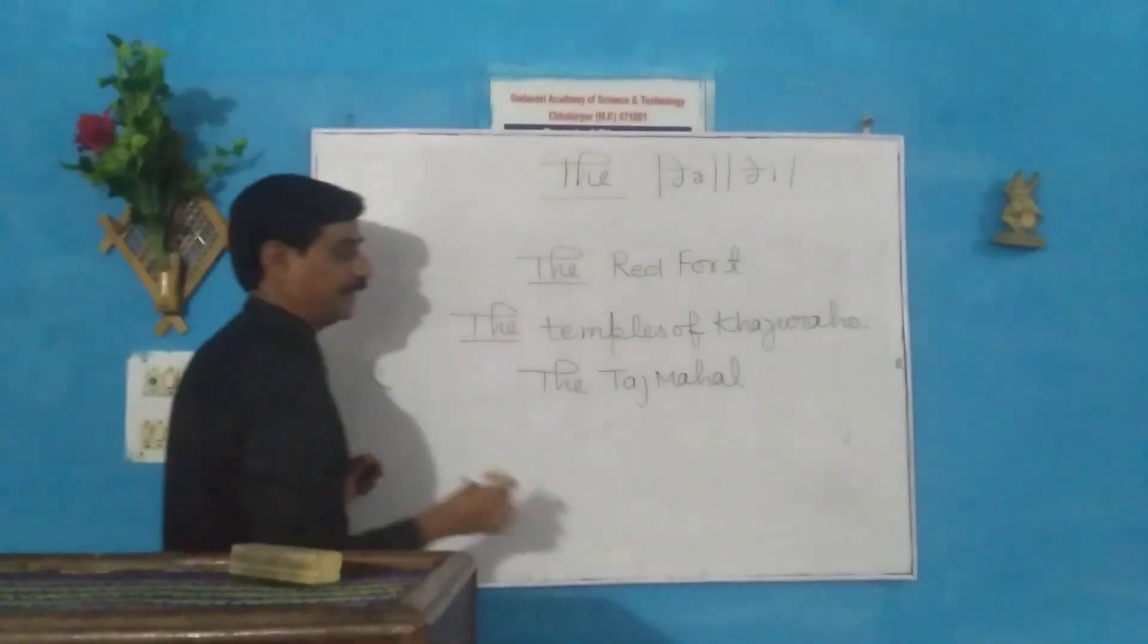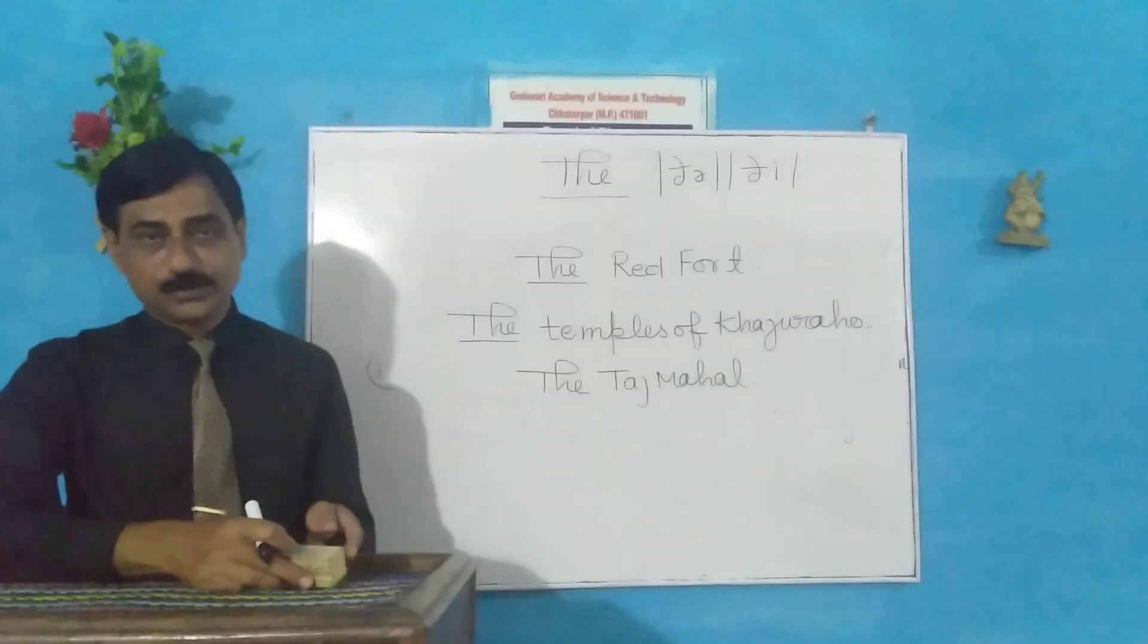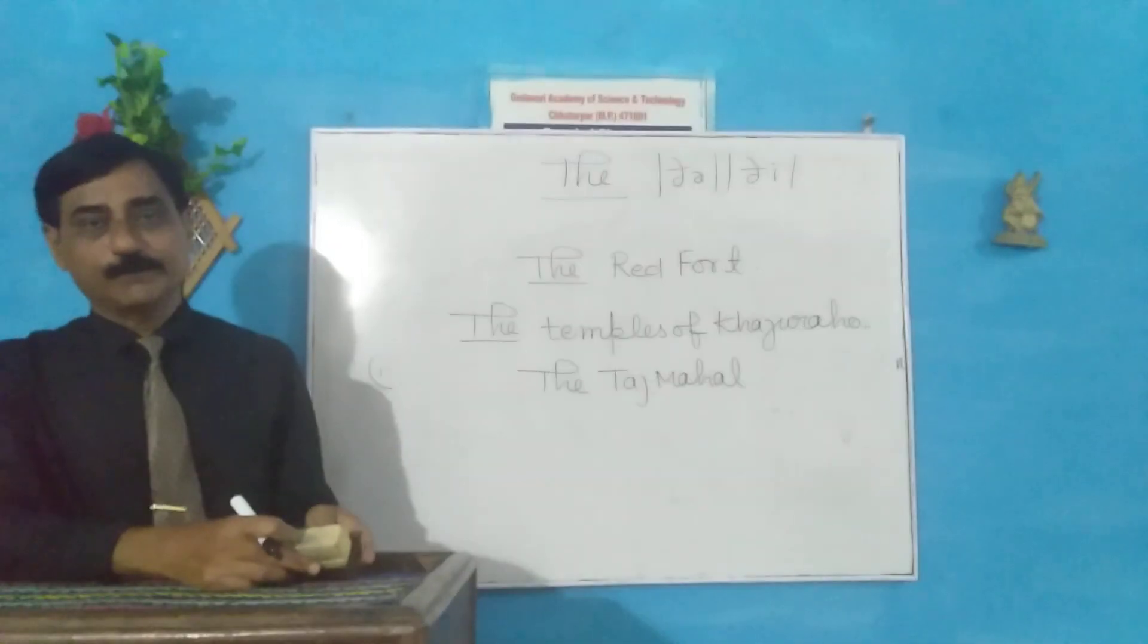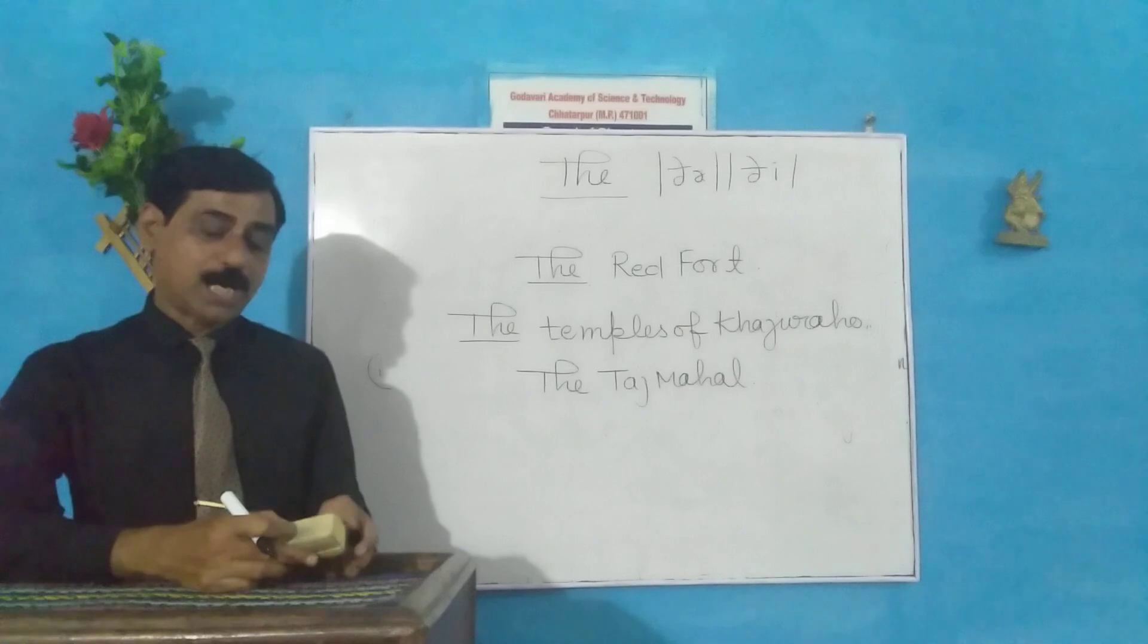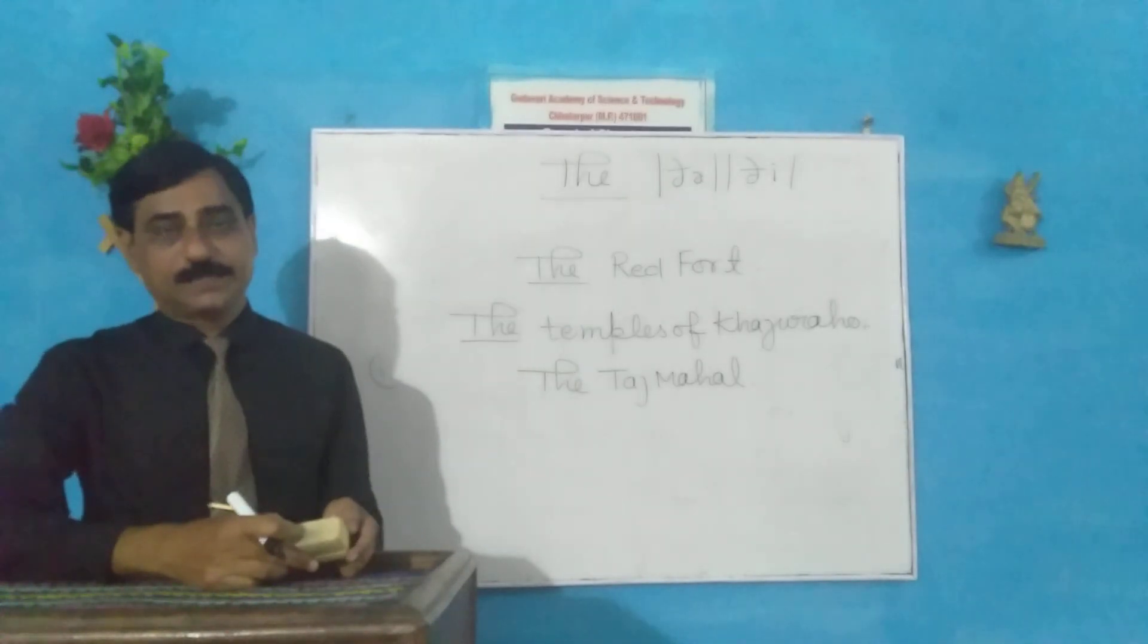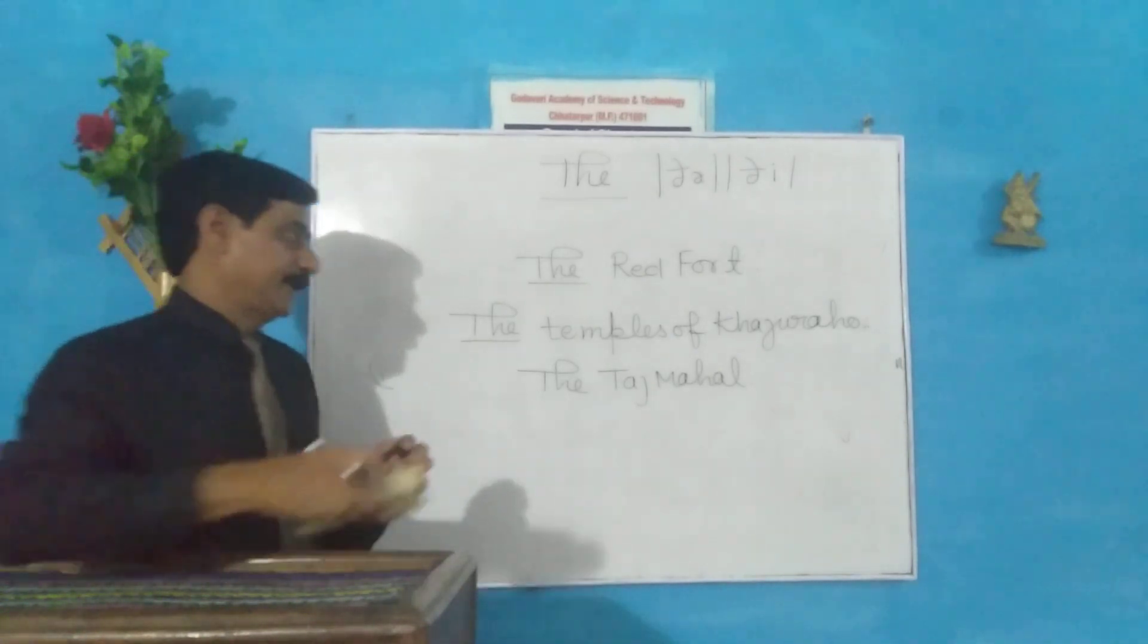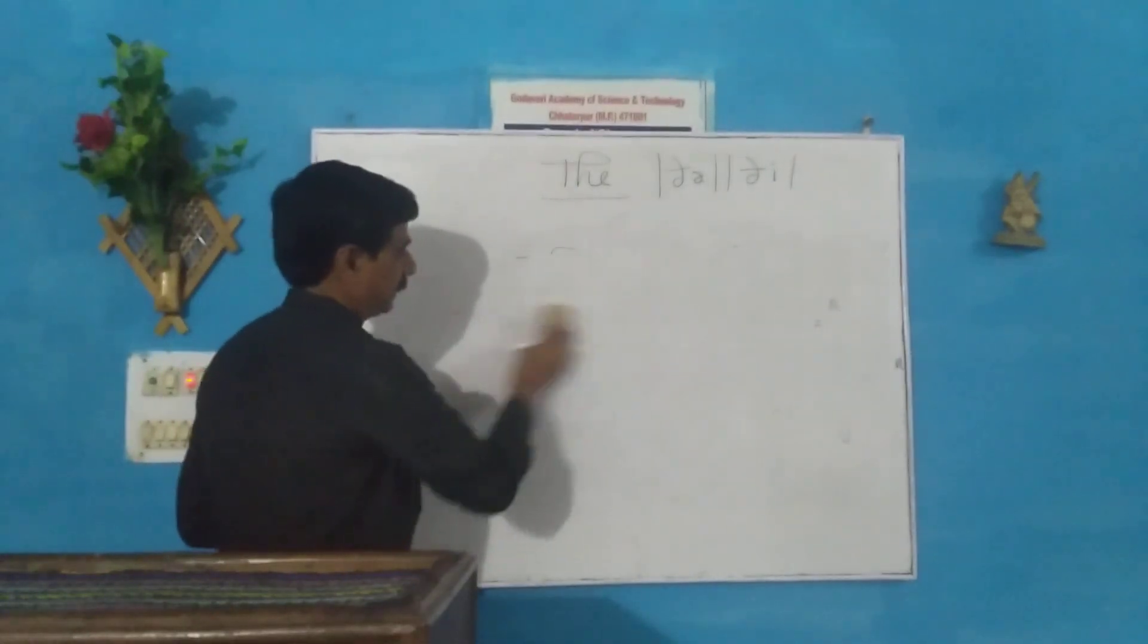Next rule: The is used before famous religious books or epics. What is an epic? An epic is a long narrative poem. The great epics: the Mahabharata, the Ramayan, the Bible, the Quran, the Gita, the Vedas. This is used before famous religious books.